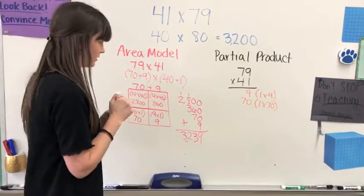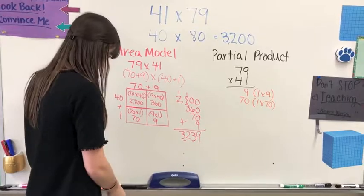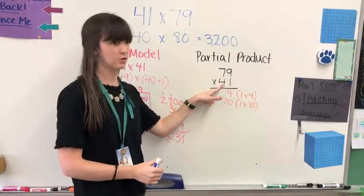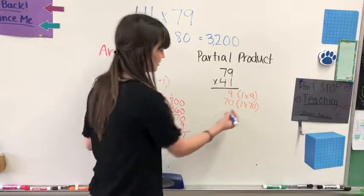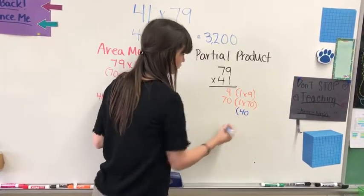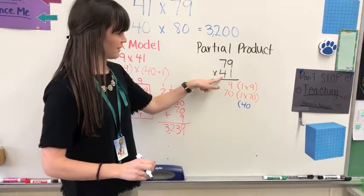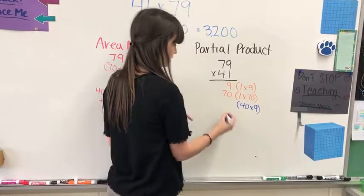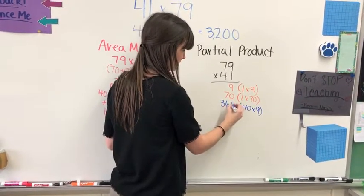I'm going to change my color now because we're done working with that 1, and we're now working with this 4. This 4 needs to be multiplied two times as well. But this 4 isn't 4. It is in the tens place, so it's 40. So we multiply 40 times 9. 40 times 9 is 360.